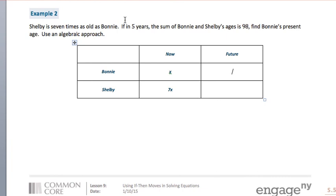Now in the future, it says if in 5 years, the sum of Bonnie and Shelby's ages is 98, find Bonnie's present age. Well, 5 years into the future, Bonnie will be X plus 5 years. And Shelby will be 7X plus 5.